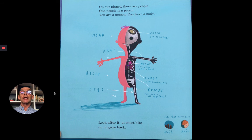On our planet there are people. One people is a person. You are a person. You have a body. A head, a brain for thinking, arms, heart to pump your blood, belly, legs, lungs for breathing air, bones to hold it all together. Look after it as most bits don't grow back. But bits that grow back are your nails and your hair.